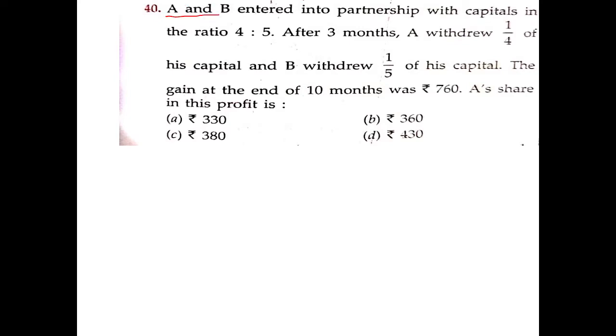A and B entered into a partnership with capitals in the ratio of 4 is to 5. After 3 months, A withdrew 1 by 4 of his capital and B withdrew 1 by 5 of his capital. The gain at the end of 10 months was 760.